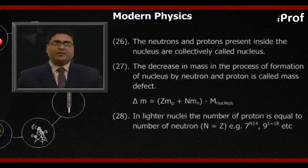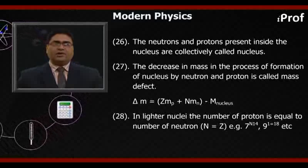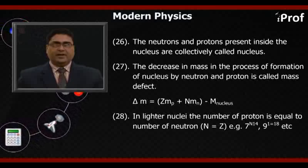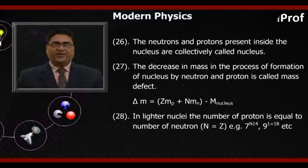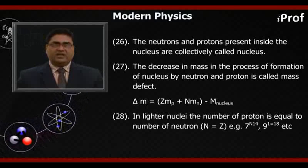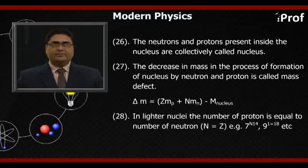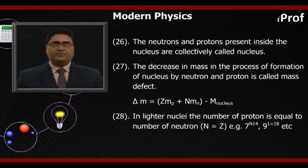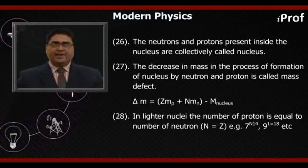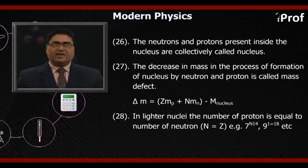Twenty-sixth, the neutrons and protons present inside the nucleus are collectively called nucleons. Twenty-seventh, the decrease in mass in the process of formation of nucleus by neutron and proton is called mass defect. Twenty-eighth, ΔM equals Z·Mₚ plus N·Mₙ minus M_nucleus. Nuclear mass defect equals mass of nucleons minus mass of nucleus.